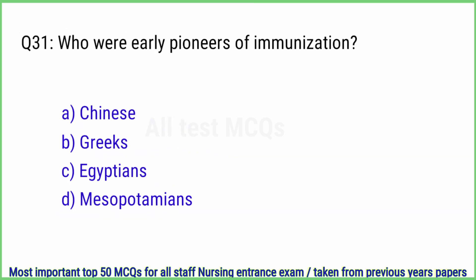Q31. Who were the early pioneers of immunization? The right answer is option A, Chinese.